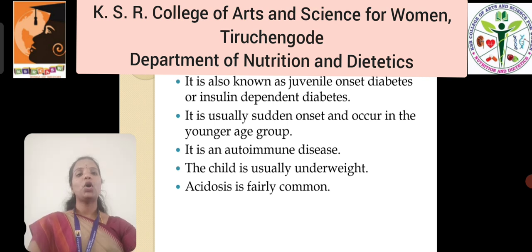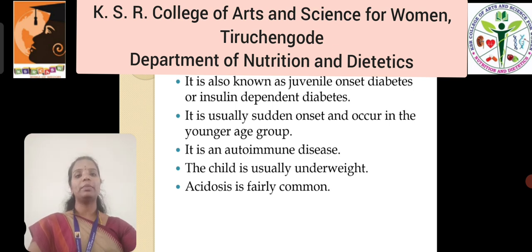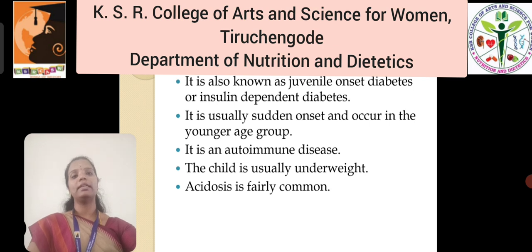There are commonly two types of diabetes mellitus, and the third one which occurs during the time of pregnancy, also known as gestational diabetes. Type 1 diabetes is usually sudden onset and occurs in the younger age group. It is an autoimmune disease, and the child is usually observed as underweight.